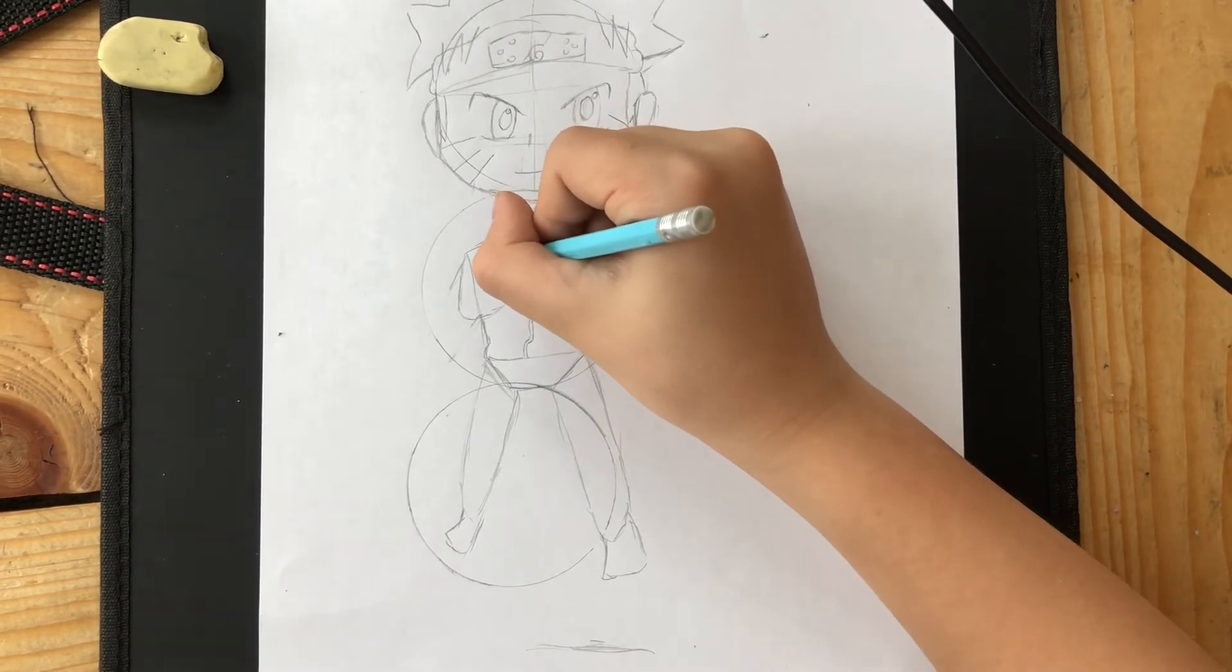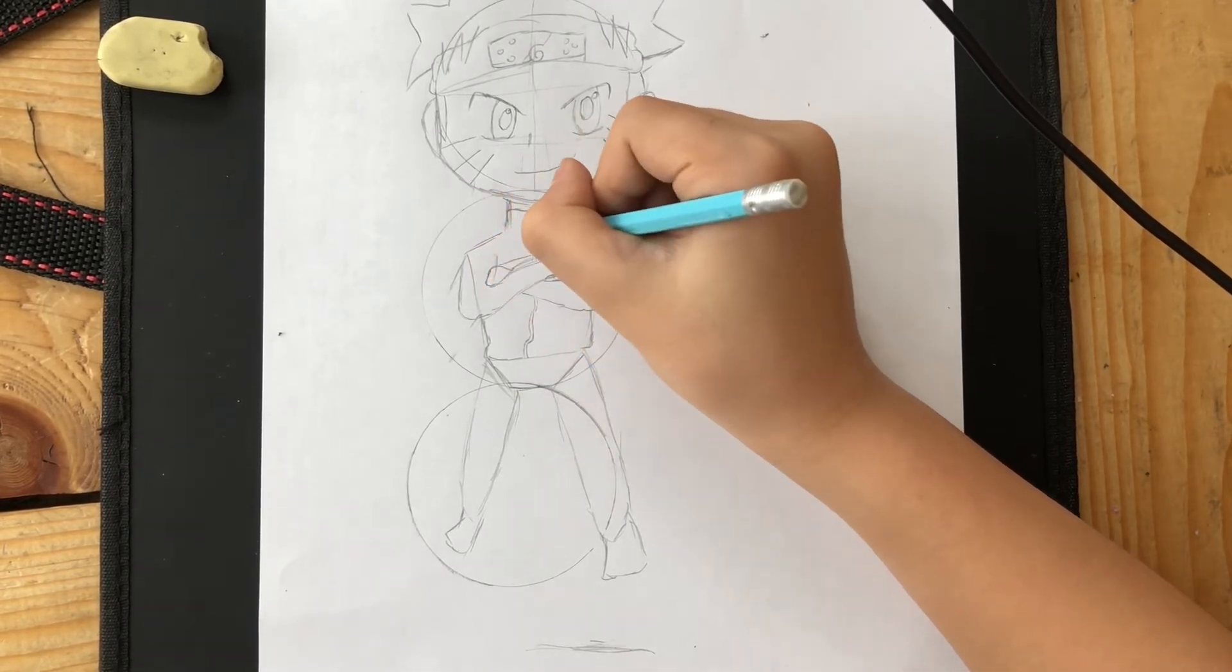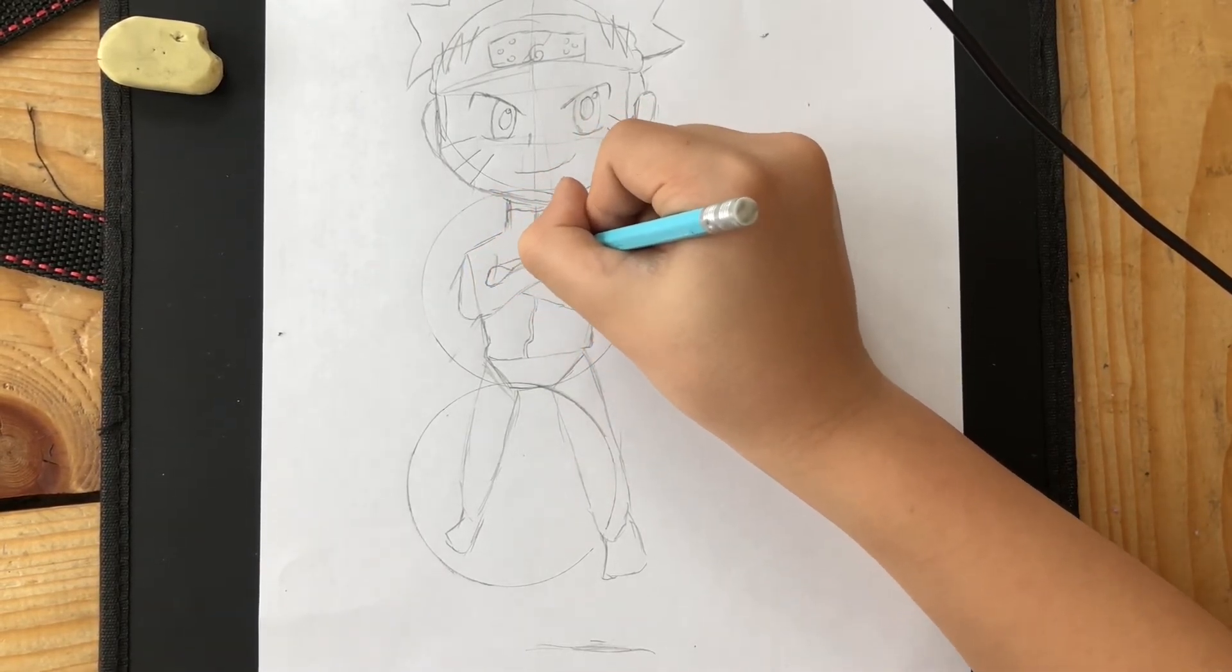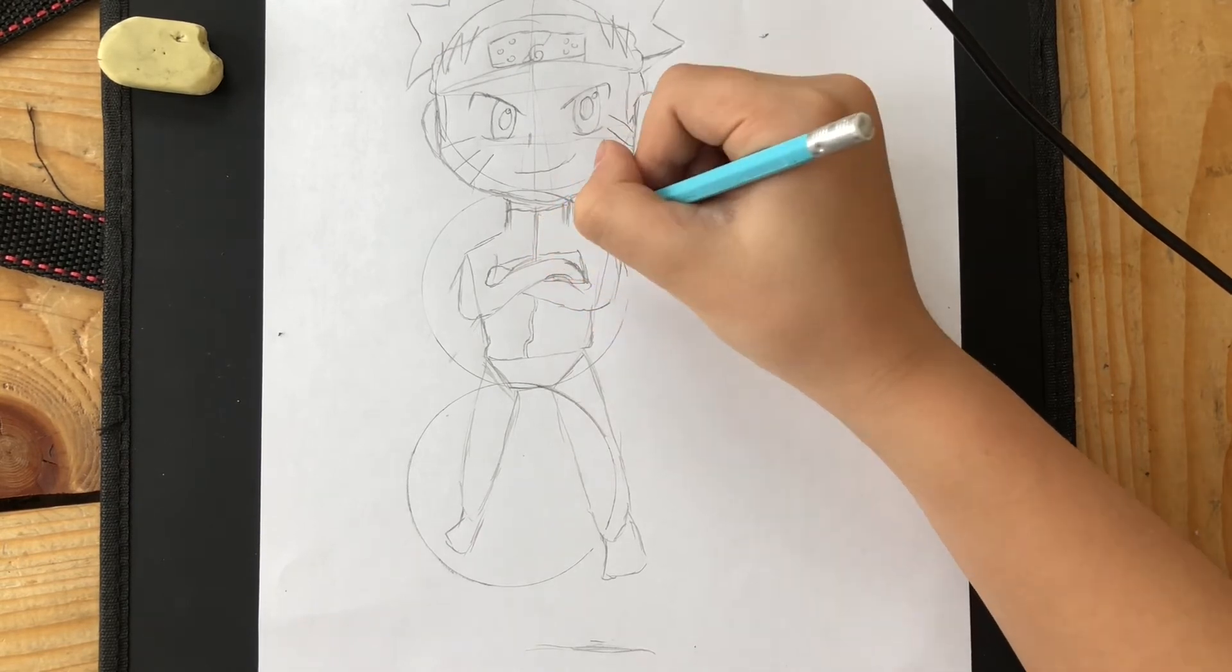You can also add swords, kunai, shurikens, or even tails if you're drawing a furry.